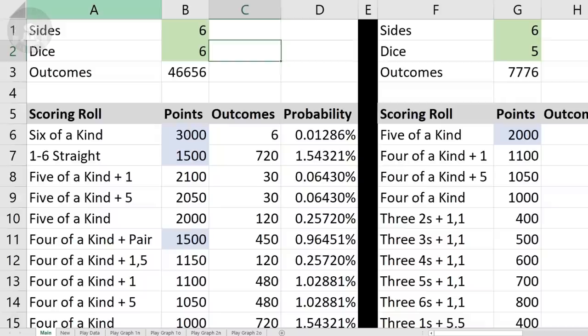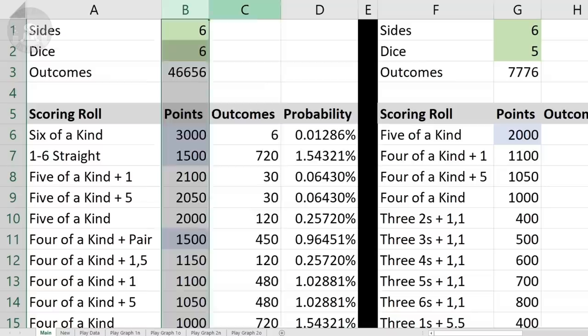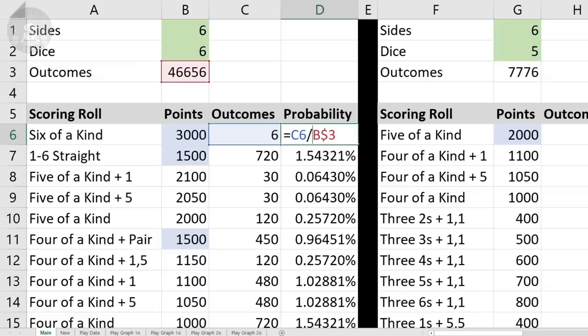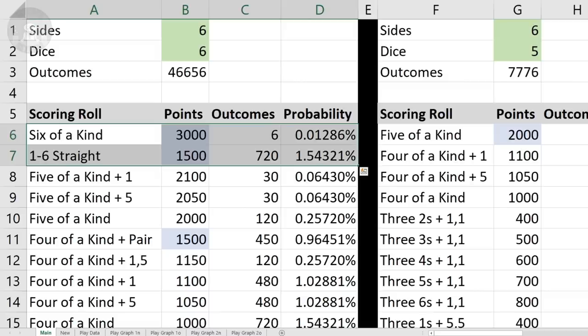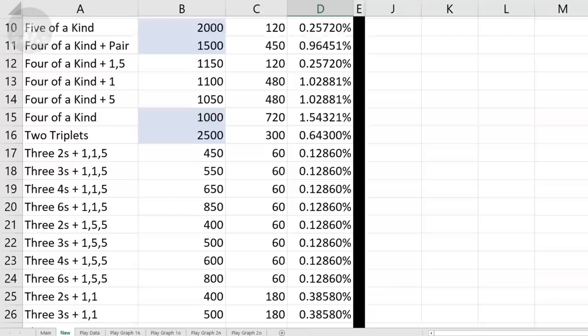Alright, so we've got the list of all possible scoring rolls, the number of points they're officially worth, and the number of ways they occur. Divide the number of ways a specific roll can occur by the total number of possible rolls, and you've got yourself a probability. First of all, the one through six straight is way more common than six of a kind. Like, by a lot. So, the evidence I based this video on was completely anecdotal, which is good to know, I guess. But overall, there still doesn't appear to be any correlation between probability and score.